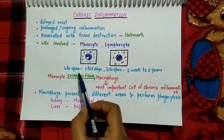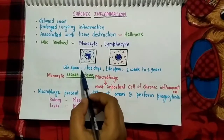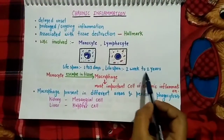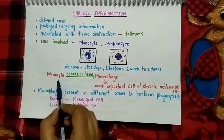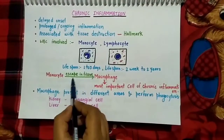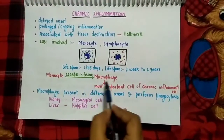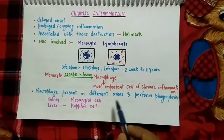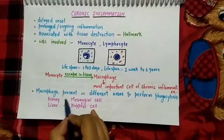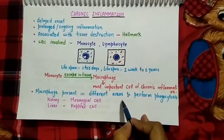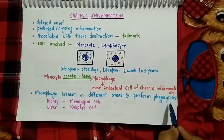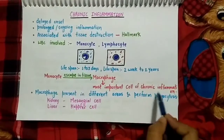The lifespan of monocyte is one to three days, while the lifespan of lymphocyte is two weeks to two years. Normally monocytes are present inside the blood, but when a monocyte migrates into the tissue from the blood, it is called a macrophage, which is the most important cell of chronic inflammation.